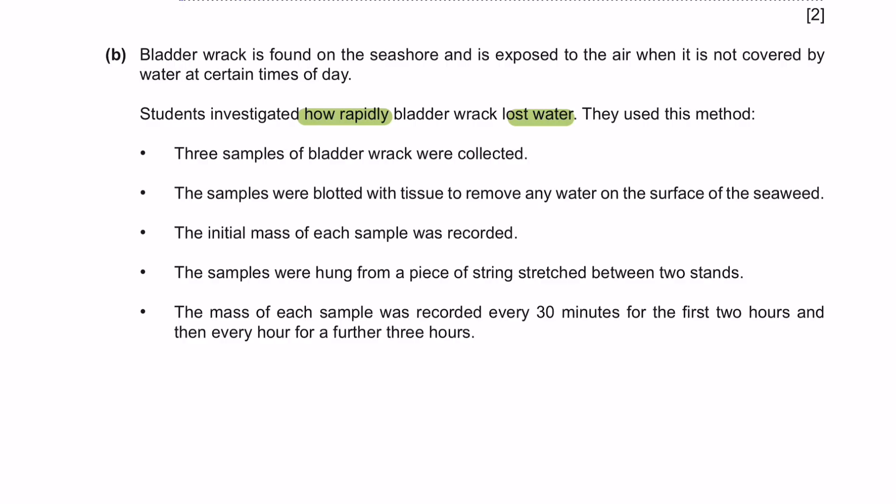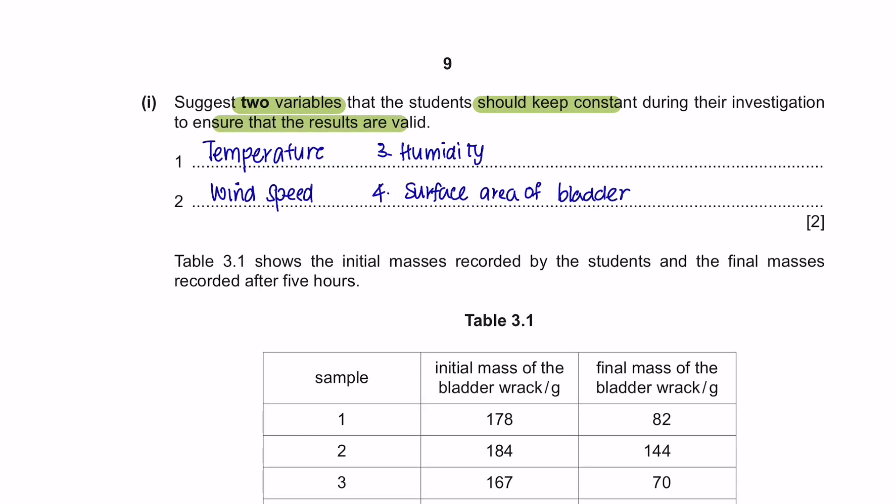In this investigation, they are looking to find how fast the water is being lost and tissue was being used to remove any water on the surface of the seaweed and then they were hung from a piece of string. So we have to ensure that there are no external factors such as a windy day that could affect the water being dry faster or that the temperature was higher or even the humidity of the environment is low or high. We should also make sure that the samples of bladder rack collected has the same surface area as this could affect the rate of evaporation.